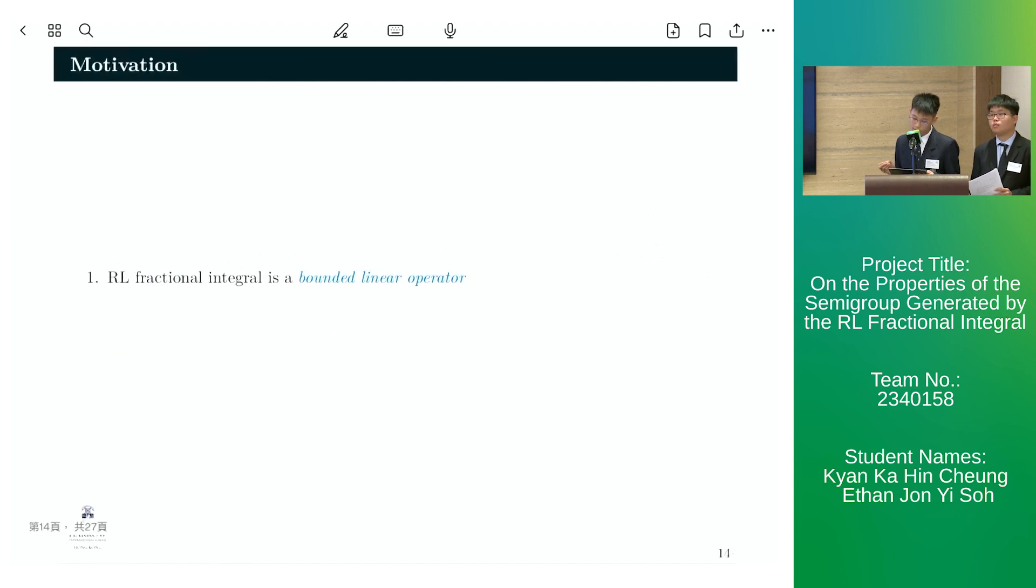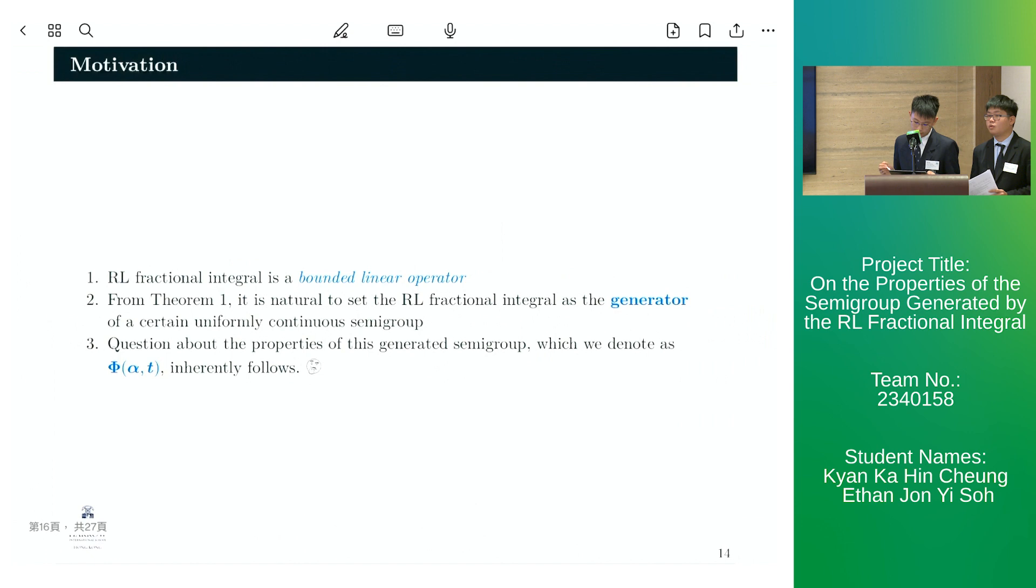The reason for the topic of our paper is that firstly, J alpha is well known to be a bounded linear operator. And so by theorem one, it is then natural to set the J alpha as the infinitesimal generator of a certain uniformly continuous semigroup. Hence, questions about the properties of this generated semigroup, which we denote as phi, inherently follows.